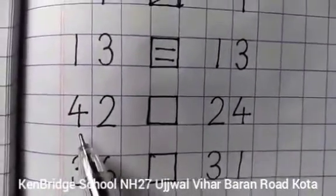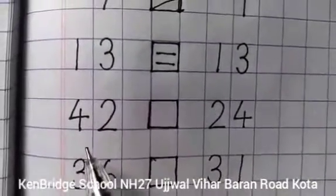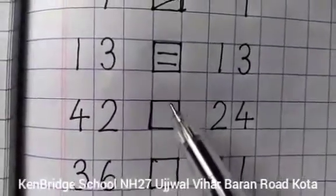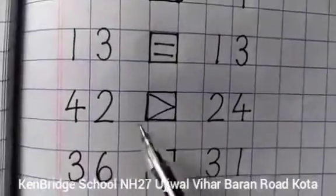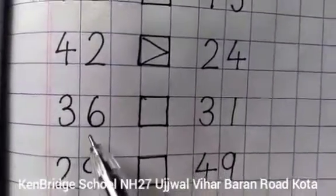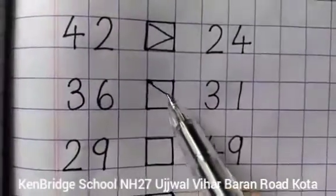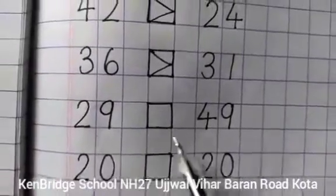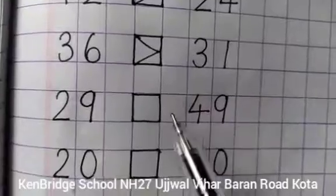Number forty-two and number twenty-four. Which is bigger? कौनसा number बाद में आता है? Forty-two. So we will put a sign — we will open the mouth on the side of forty-two. Thirty-six, thirty-one — bigger number is thirty-six. Twenty-nine, forty-nine — forty-nine is the bigger number.